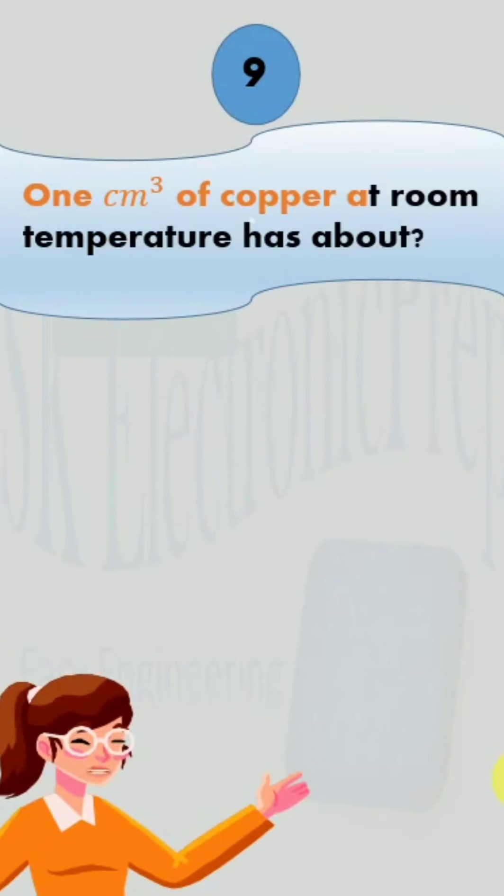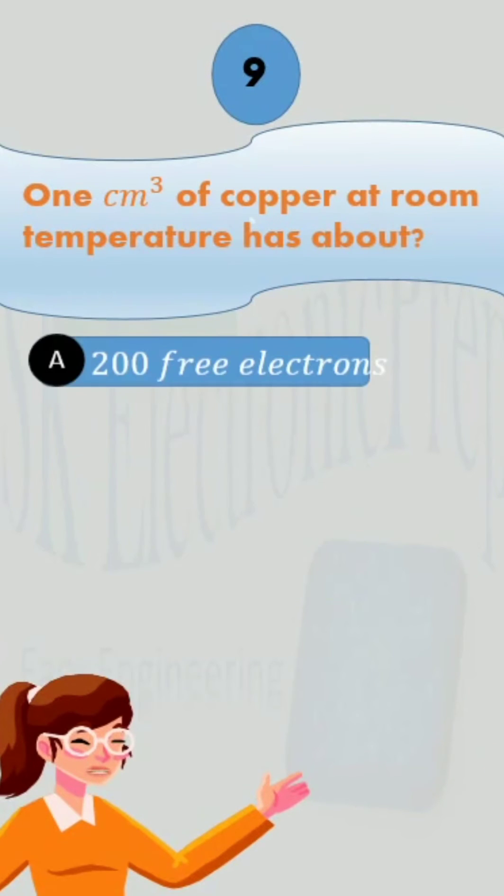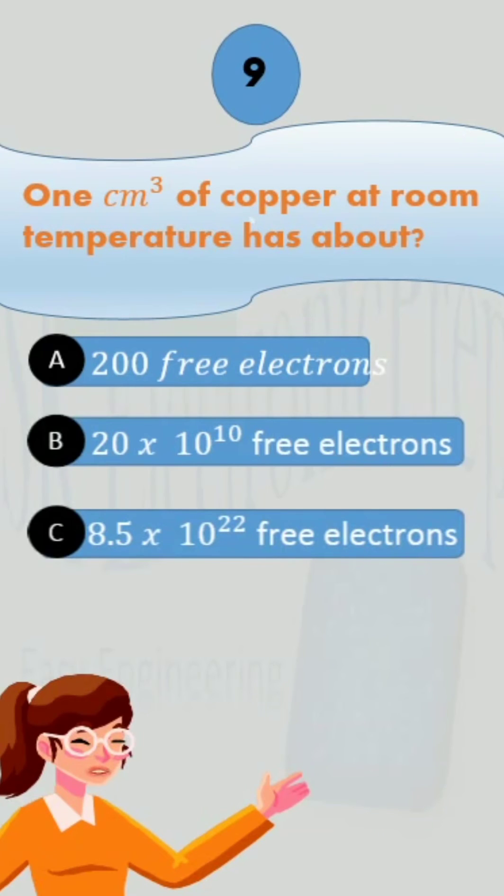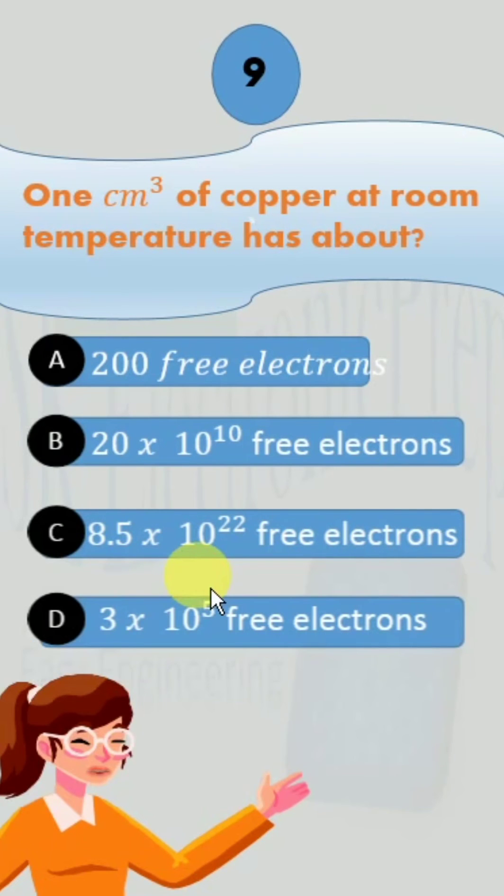One centimeter cube of copper at room temperature has about: 200 free electrons, 20 into 10 raised to the power 10 free electrons, 8.5 into 10 raised to the power 22 free electrons, option D, 3 into 10 raised to the power 5 free electrons.